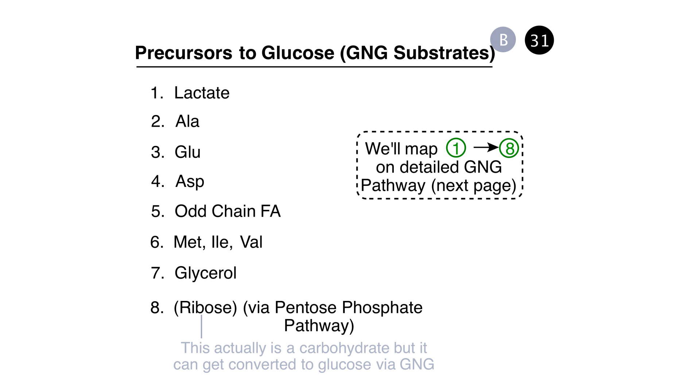We haven't covered the pentose phosphate pathway yet, but we'll see when we do cover it exactly how this pathway works to manufacture glucose. A little bit later in this lecture, we'll see how each of these precursors, numbers one through eight, are converted to glucose by the pathway of gluconeogenesis.